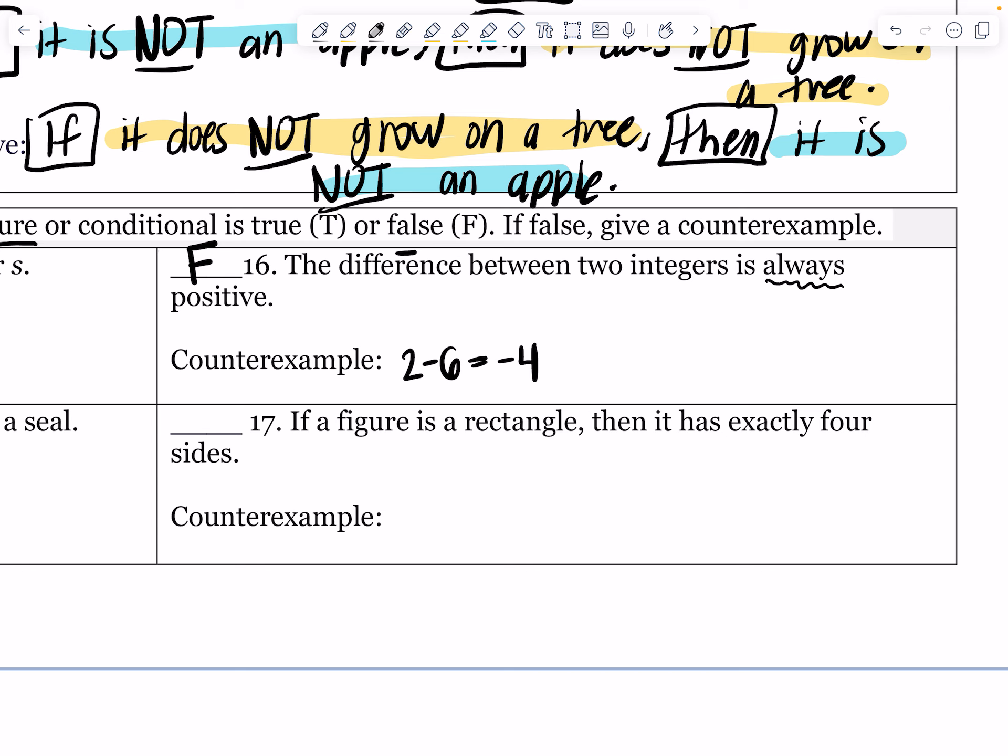Problem 17: If a figure is a rectangle, it has exactly four sides. Let's go ahead and draw that out. If it's a rectangle, it has exactly four sides - that is 100% of the time true. If rectangle, then four sides. Now, if it said it the other way, if four sides then rectangle, that would be false. But for this case it is true, so our counterexample is not applicable.